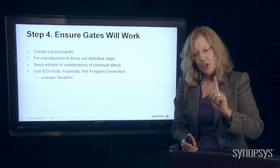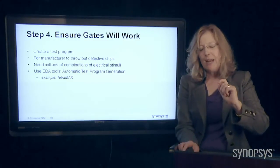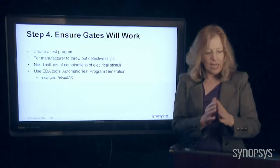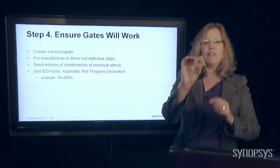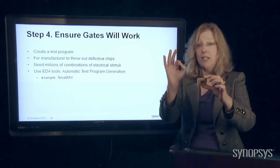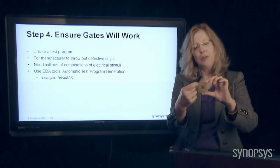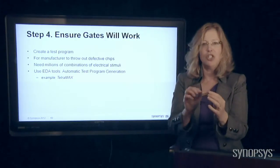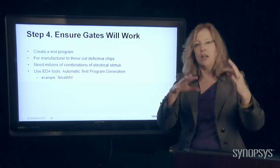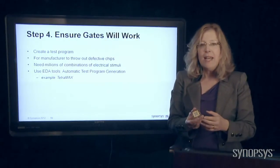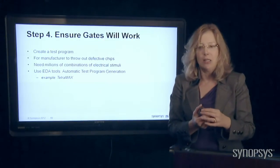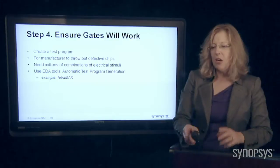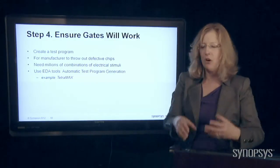The next step is to make sure that we create a good test program. This is again for the manufacturer to throw out the defective chips. Imagine you've got a billion transistors in there and you want to turn every single one on and off to make sure they're all working — you're going to have to put electricity on each little pin, send it all through, and measure it on each other little pin, making every single possible combination of switches on and off work on the tester. The amount of testing that would take is just mind-boggling — human beings could not do that without automation. So we use an EDA tool called Automatic Test Program Generation, which figures out all those combinations for you.